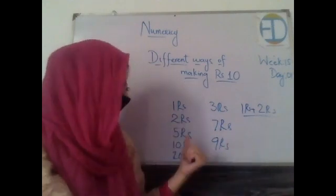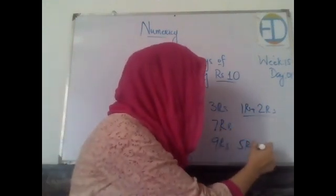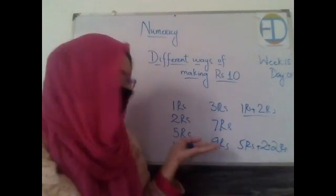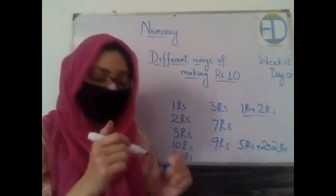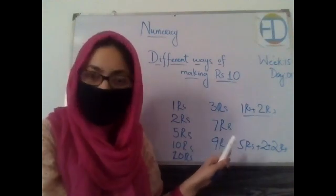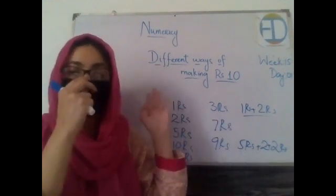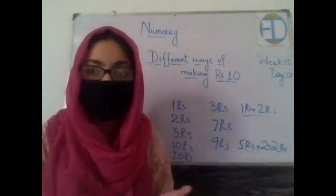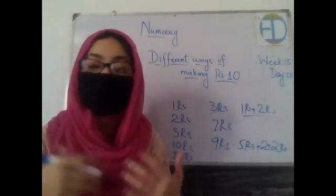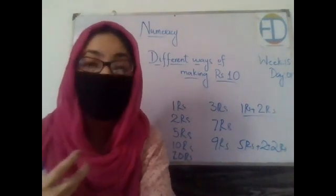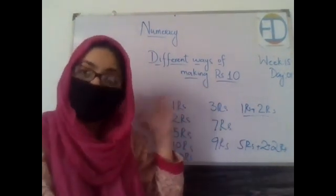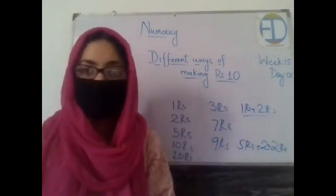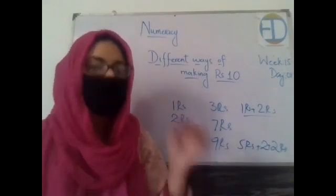If I want to buy something for nine rupees, I can take one coin of five rupees and two coins of two rupees. This does not mean that if I don't have a coin of nine rupees I cannot buy anything. That's why we are studying different ways of making 10 — so you can make different combinations for amounts that have no single coin or note.